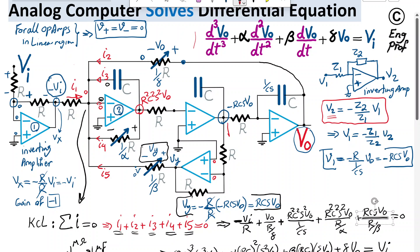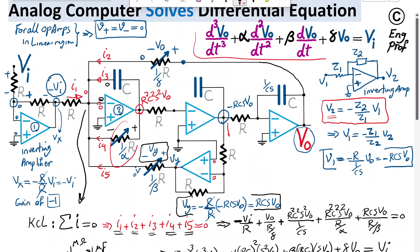This proves that Vout at the output is the solution of the third-order differential equation with programmable coefficients, which we can set using the potentiometers. I hope this example is helpful. For more examples, please take a look at the collection of circuit videos under the circuit playlist. Thanks for watching.